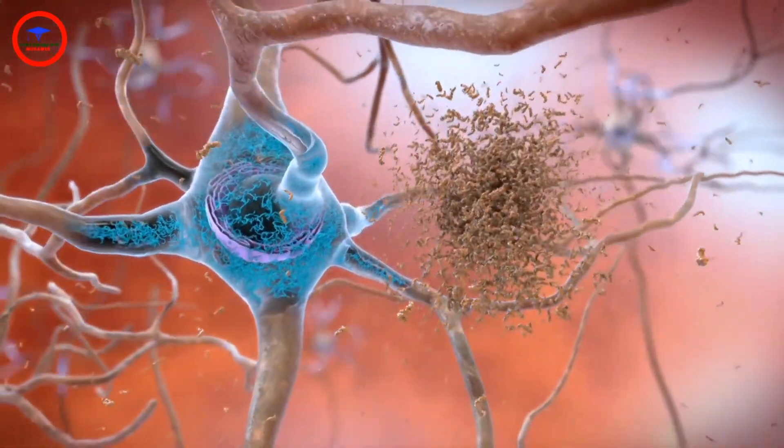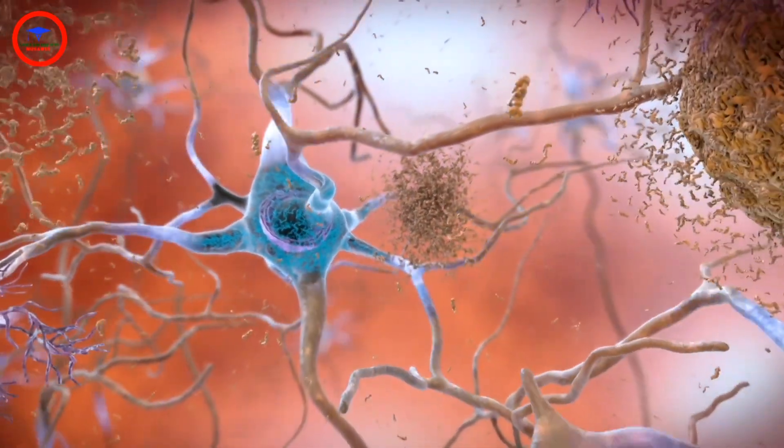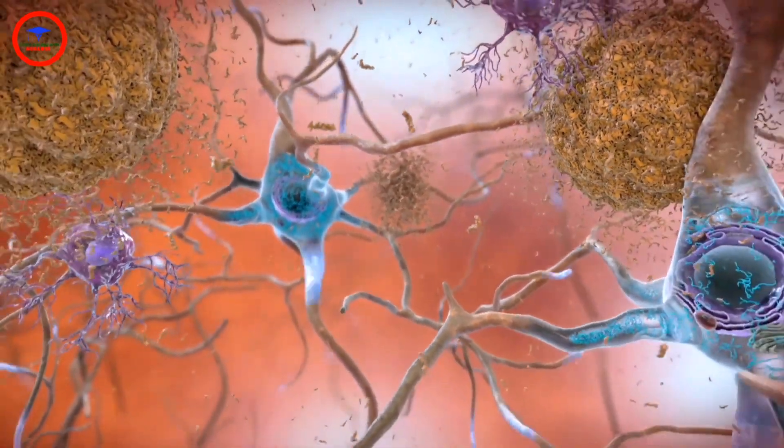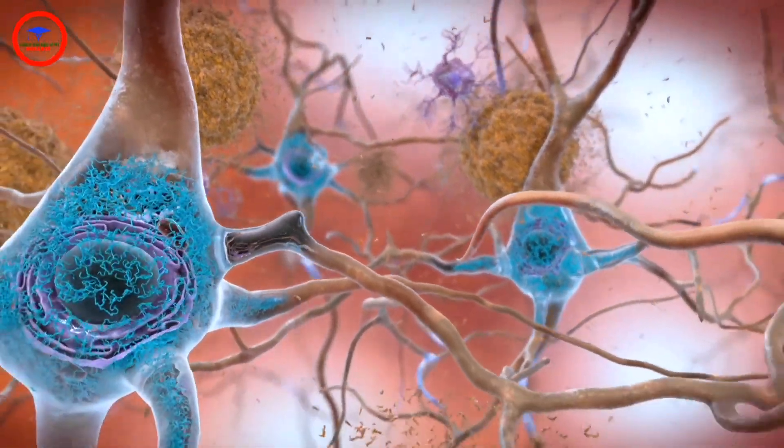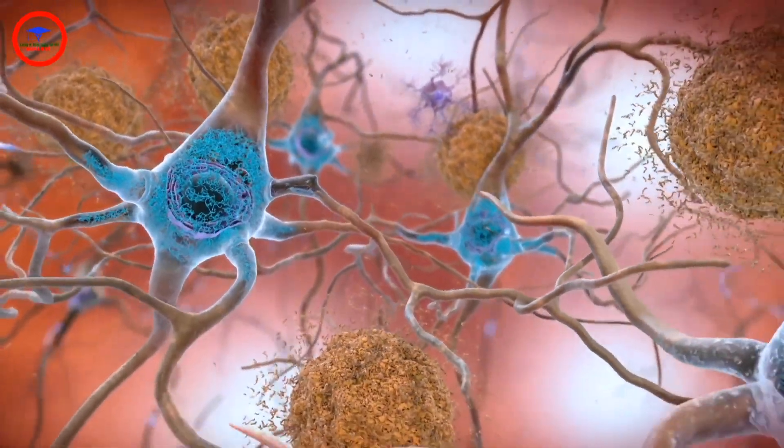As the level of amyloid reaches a tipping point, there is a rapid spread of tau throughout the brain. But tau and beta-amyloid may not be the only factors involved in Alzheimer's.